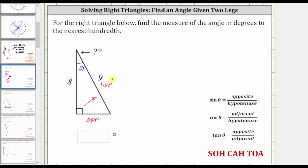And then the adjacent side to angle theta is going to be the side of the angle theta that's not the hypotenuse, and therefore the adjacent side to angle theta is this side here that has a length of eight units.